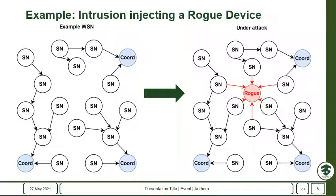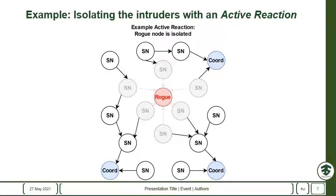For example, suppose a WSN with multiple sensor nodes and coordinators. An attacker could inject a rogue device acting as a coordinator node. Thanks to the active reactions, once the intrusion has been detected, TinyWits will automatically perform one or more defensive actions.